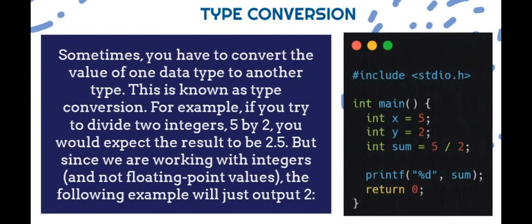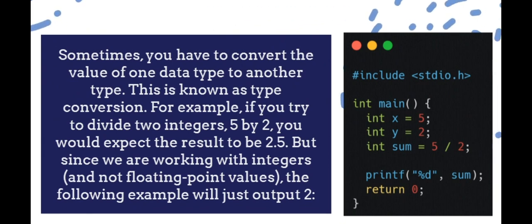The type conversion. Sometimes, you have to convert the value of one data type to another type. This is known as type conversion. For example, if you try to divide two integers, 5 by 2, you would expect the result to be 2.5. But since we are working with integers, and not floating point values, the following example will just output two.